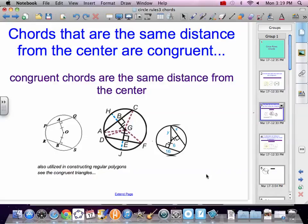Chords of the same distance from the center are congruent. The distance is always going to be the shortest distance, the perpendicular distance. So if O to A and O to B is the same distance, then chord PQ and chord RS are the same. Also goes backwards. If the chords are congruent, they're the same distance from the center.